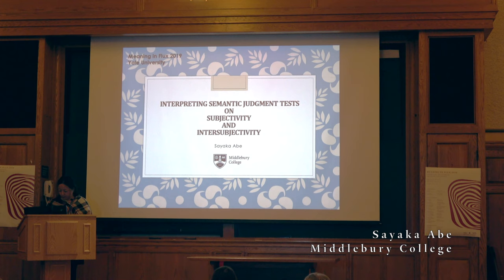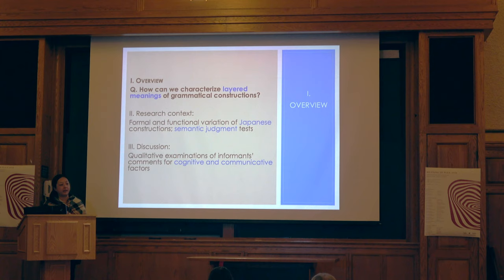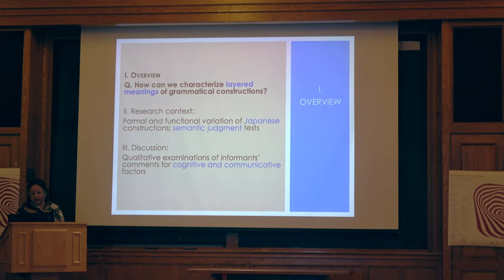Subjectivity and intersubjectivity. I'd like to discuss how layered meanings can be characterized in the context of historical change. My talk focuses on the case of Japanese grammatical constructions and how their functions have extended, resulting in polysemy and possibly indicating changes in progress.